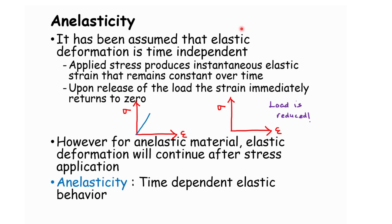It has been assumed that plastic deformation is time independent — applied stress produces instantaneous elastic strain that remains constant over time, and upon release of loading the strain immediately returns to zero. But for anelastic materials, deformation is time-dependent and partially recoverable, between elasticity and plasticity. This is quite common in viscoelastic materials, such as some polymers like polyurethane and specific cross-linked types of rubber.